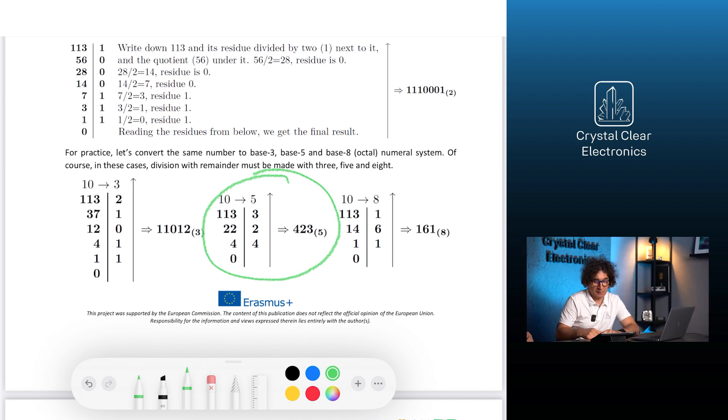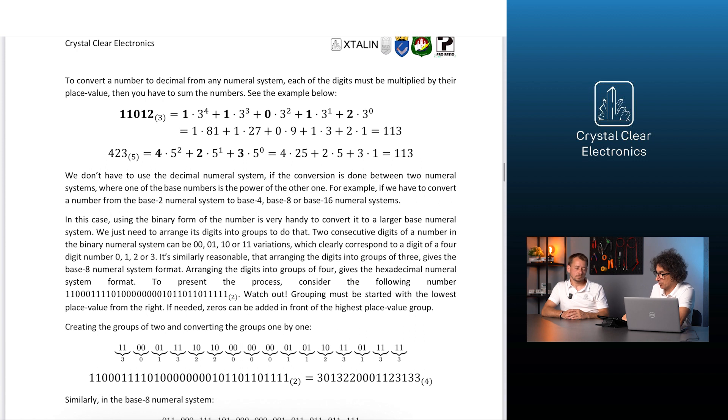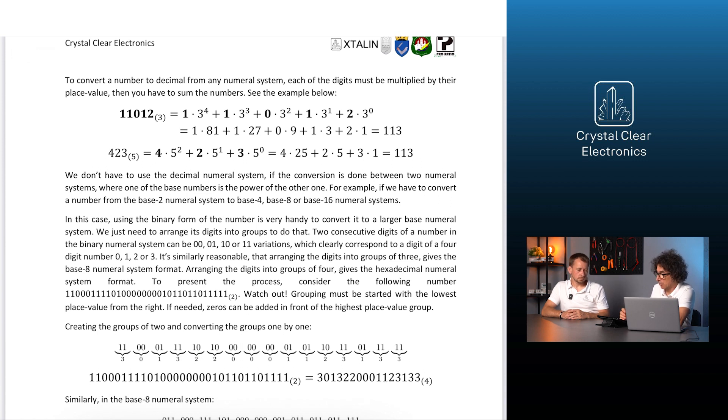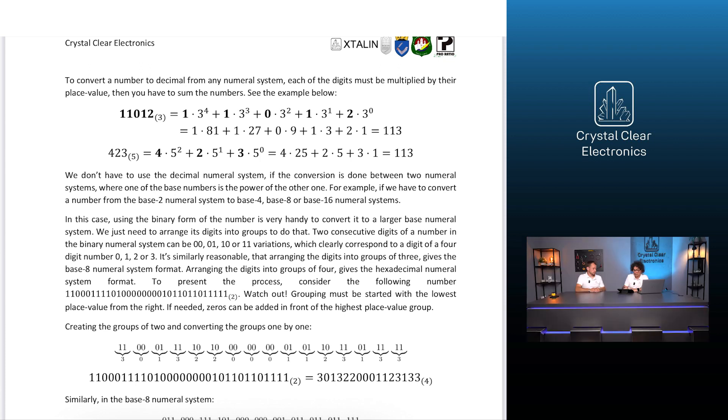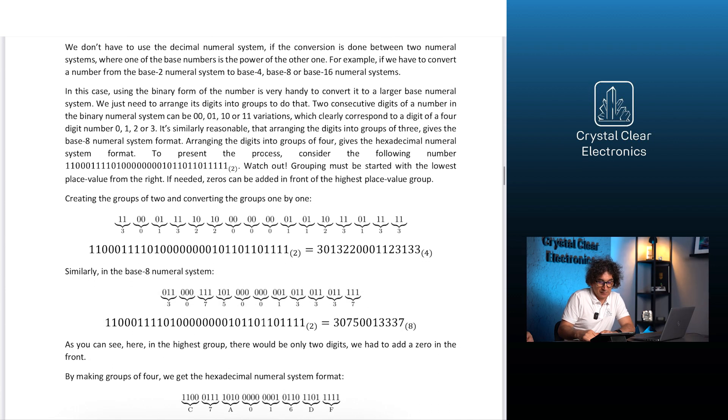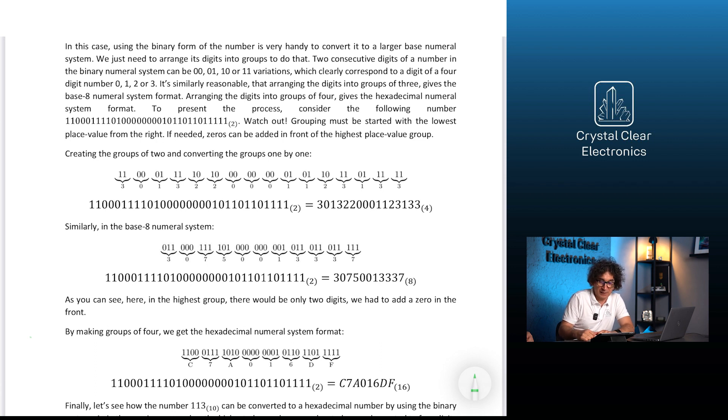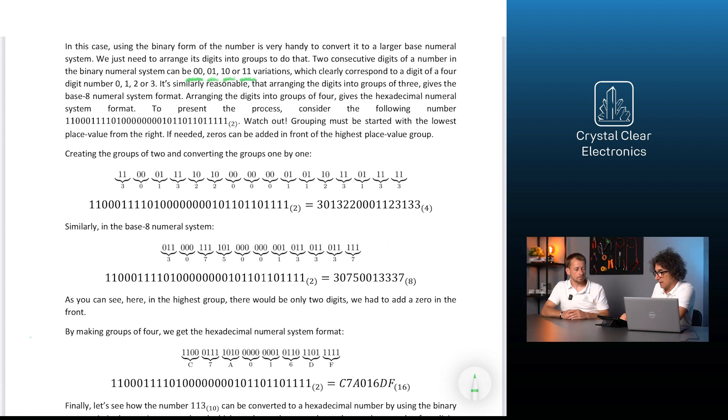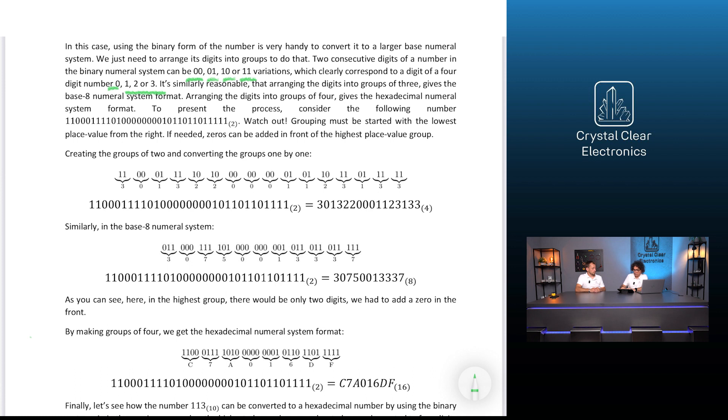We don't have to use the decimal numeral system if the conversion is done between two numeral systems where one of the base numbers is the power of the other one. For example, if we have to convert a number from the base 2 numeral system to base 4, base 8, or base 16 numeral systems. In this case, using the binary form of the number is very handy to convert it to a larger base numeral system. Two consecutive digits of a number in the binary numeral system can be 00, 01, 10, or 11 variations, which clearly correspond to a digit of a four-digit number 0, 1, 2, or 3. It's similarly reasonable that arranging the digits into groups of 3 gives the base 8 numeral system format. Arranging the digits into groups of 4 gives the hexadecimal numeral system format.